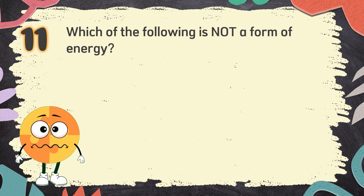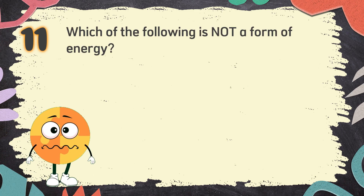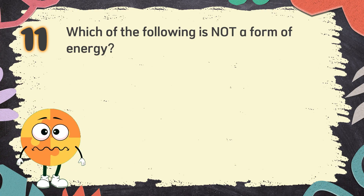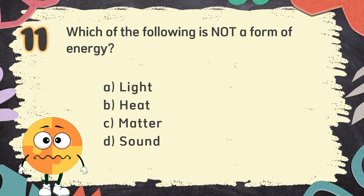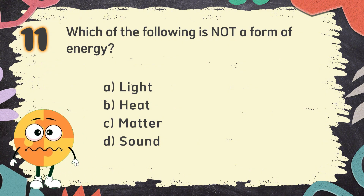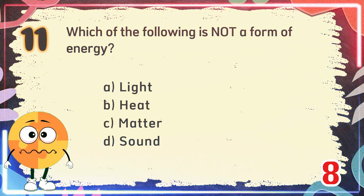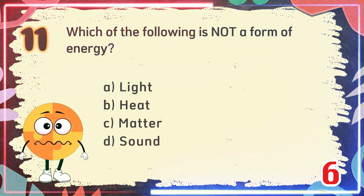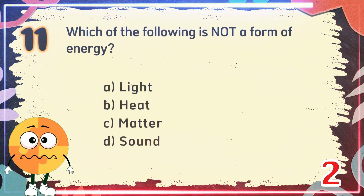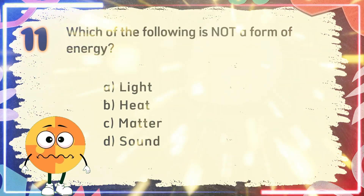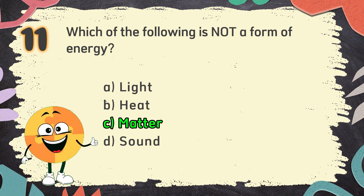Number 11: Which of the following is not a form of energy? The choices are: A. Light, B. Heat, C. Matter, D. Sound. The correct answer is C. Matter.